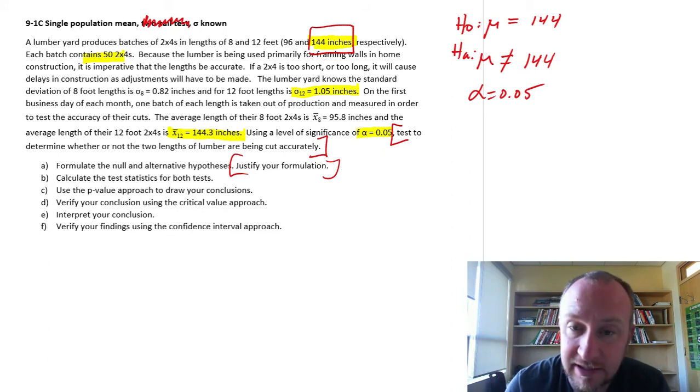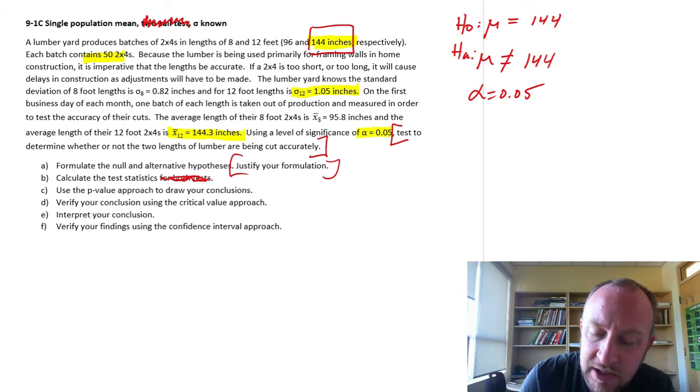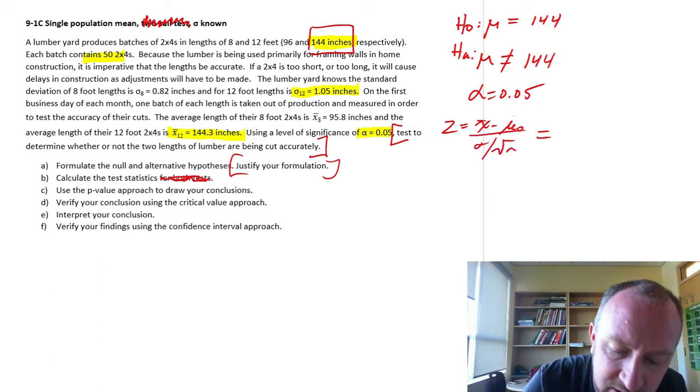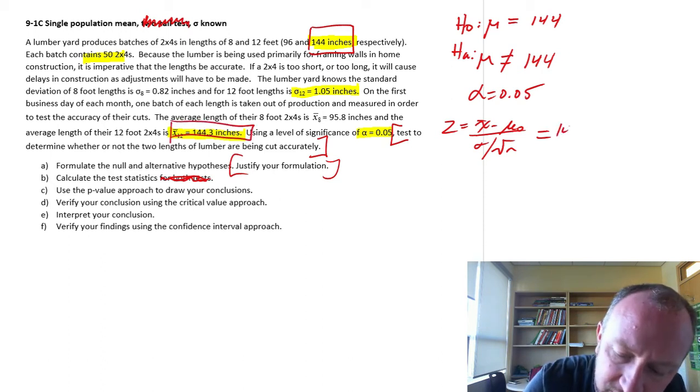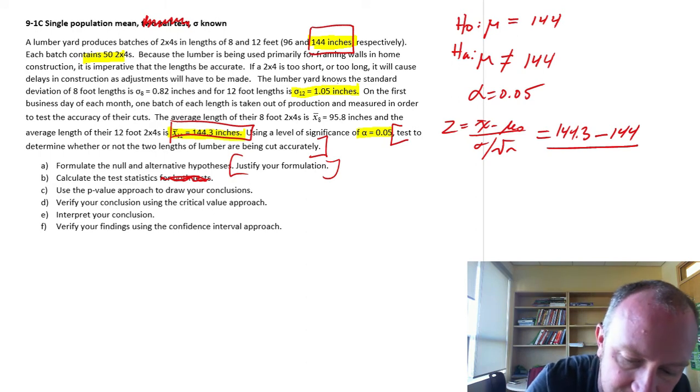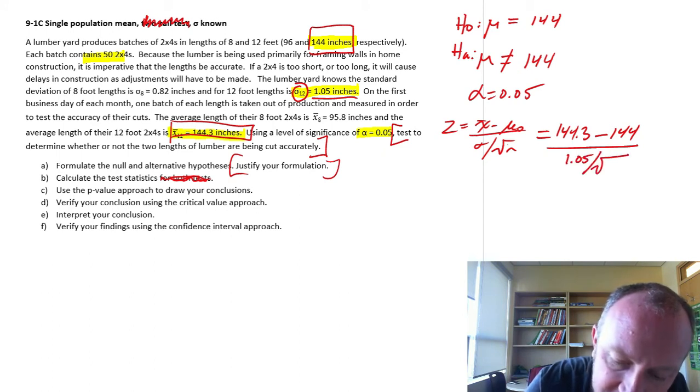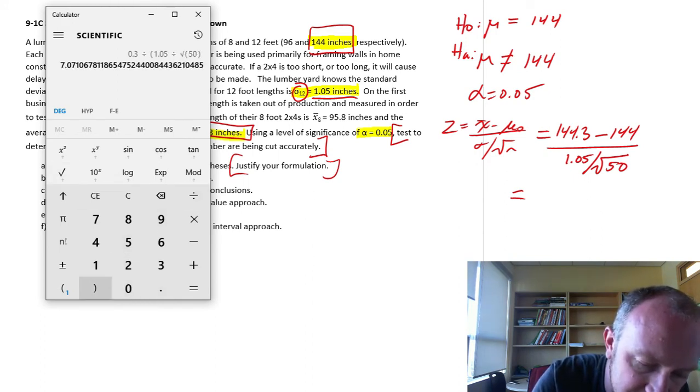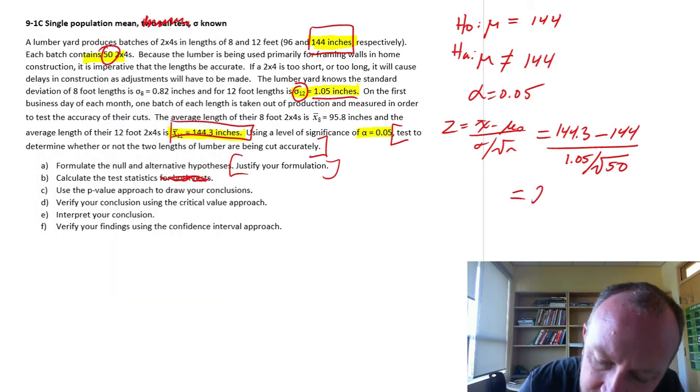Now we can get into calculating the test statistics. Our test statistic, this is a Z test, X bar minus our hypothesized value over the standard error. Our sample mean was 144.3 minus our hypothesized value. Our standard error is 1.05 inches divided by the square root of the sample size, one batch which contains 50 pieces. Now we can find our calculator here. 144.3 minus 144 divided by 1.05 over root 50 equals 2.02. So there's our test statistic.